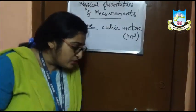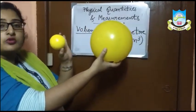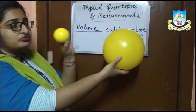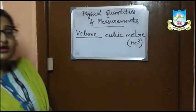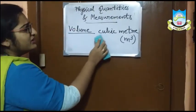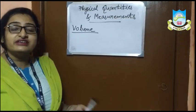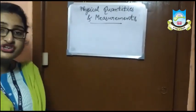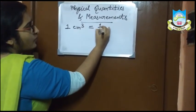Here we have two balls — a big ball and a small ball. The big ball is occupying more space and the small ball is occupying less space, so the big ball has more volume than the smaller ball. For measurement of liquid we use a measuring cylinder, measuring beaker, pipette, or burette. The units used for volume of a liquid are milliliter, kilolitre, centilitre, and litre. One cubic centimeter equals to one milliliter.